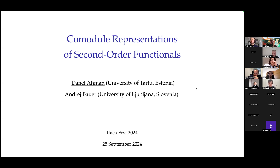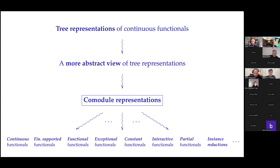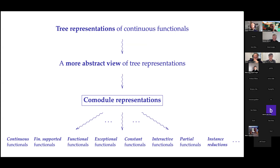What we are trying to do here is to take the classic story of representing continuous second order functionals with certain kinds of well-founded trees, and put a sprinkling of category theory, monads, and co-modules on top of it, so that we could expose the structure of these constructions more and study them in a nicer setting. The plan for today: we're going to recall tree representations of continuous functionals, look at them from a more abstract viewpoint leading to co-module representations, and then instantiate this general notion in various ways to get representations of all sorts of functionals with interesting properties — not just continuous ones.